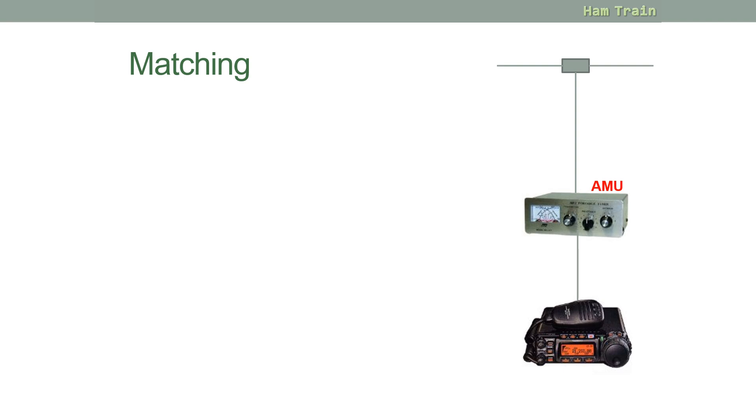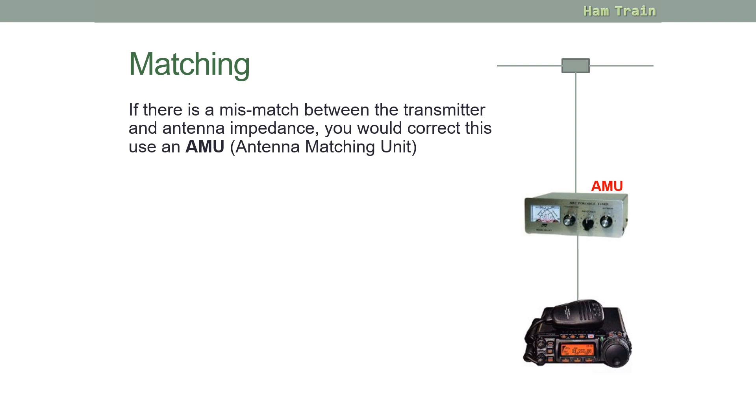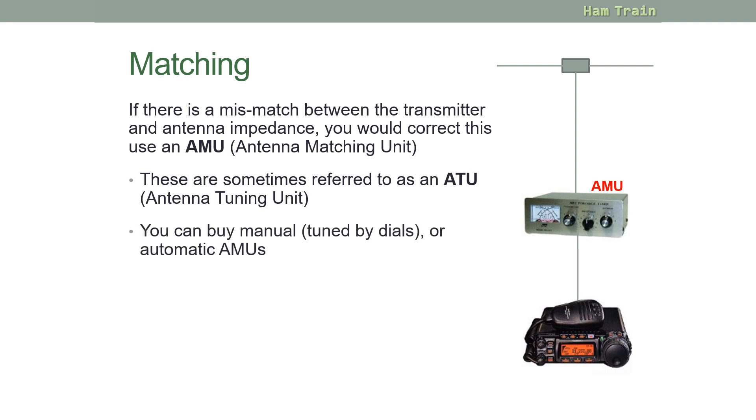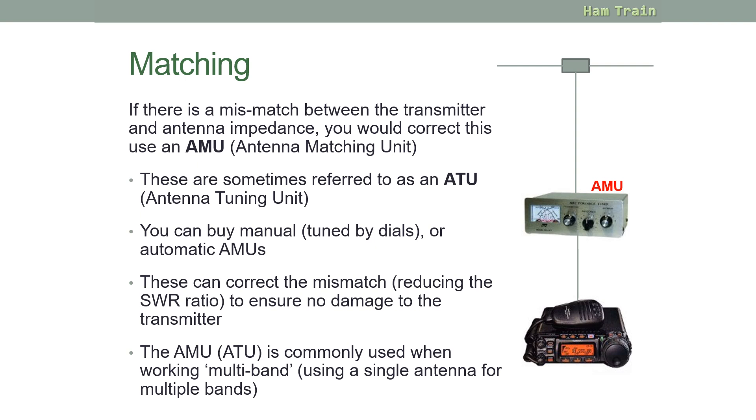So how do you deal with a mismatch? If there is a mismatch between the transmitter and the antenna impedance, you could correct this using an AMU, an antenna matching unit. There's one pictured here, between the transmitter and our antenna. AMUs are more commonly referred to as ATU, the antenna tuning unit, but actually all it's doing is providing a match between the transmitter and the antenna. You have a choice, you can buy a manual AMU, like the one pictured here. You can see this one has two needles built in, and dials that you use to set the matching. Or you can use an automatic AMU. The AMU corrects the mismatch, reducing the SWR ratio, to ensure that there's no damage to the transmitter. And the AMU, also known as the ATU, is commonly used when you're working multiband. Perhaps if you're out on a field day, and you only have the one antenna, you might want to use multiple bands. To deal with the mismatch, you'd use your AMU.